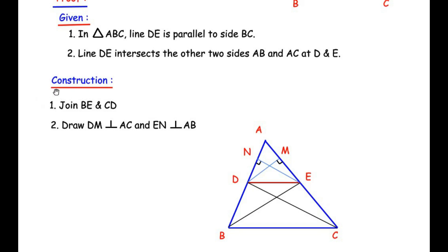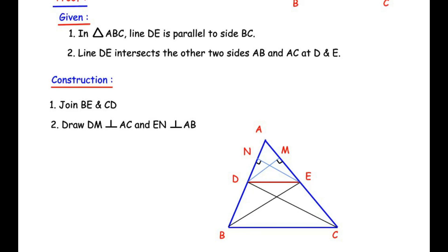That is the first part of the construction. The second part is to draw DM perpendicular to side AC. You can see I have drawn line DM at 90 degrees to side AC. Similarly, draw EN perpendicular to side AB.